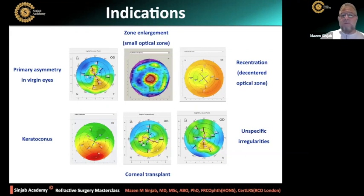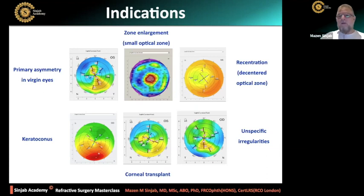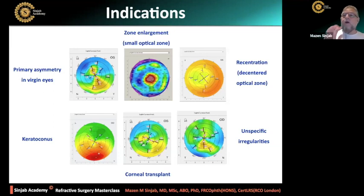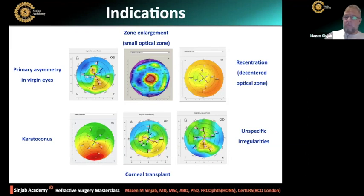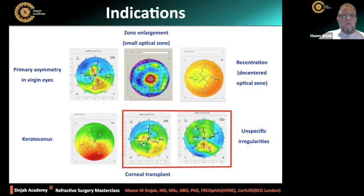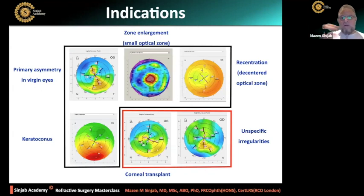For example, the primary asymmetry is usually asymmetric but high, with or without skewed radial axis. The small optical zone is central. The decentered zone is a decentered zone. Keratoconus has known patterns, as does pellucid marginal degeneration. Corneal transplantation can also be under the name of unspecific irregularities, but I put it separate because we know the cause. Now let's divide these indications into two groups.